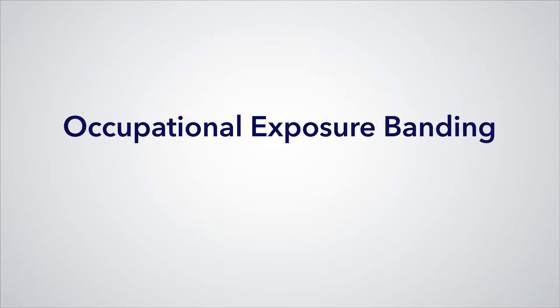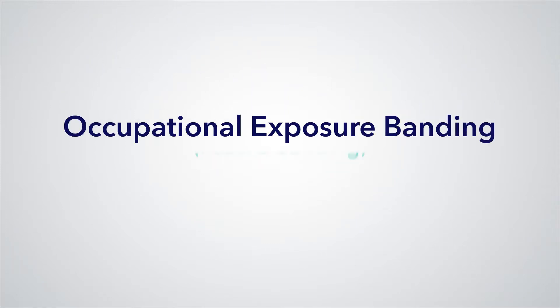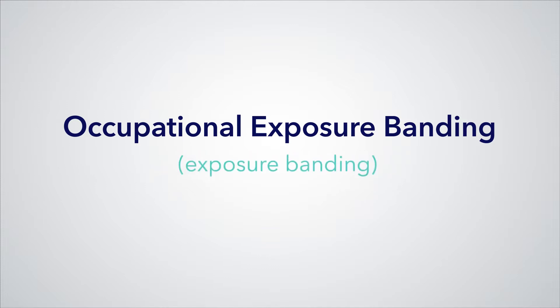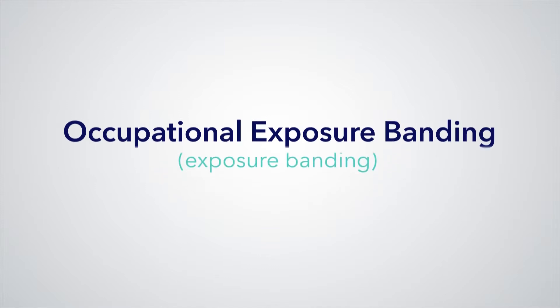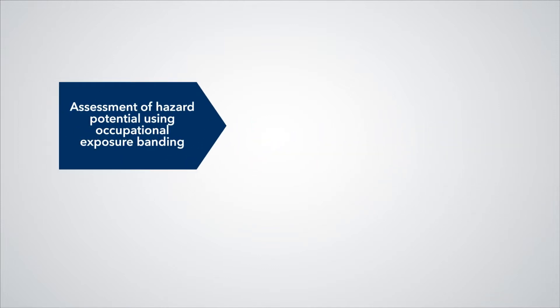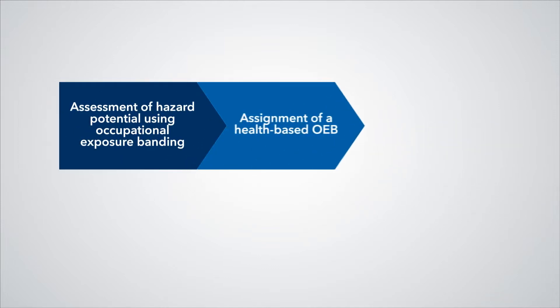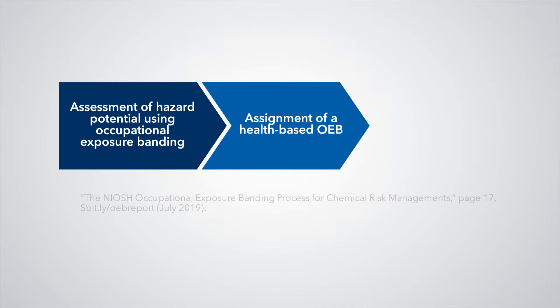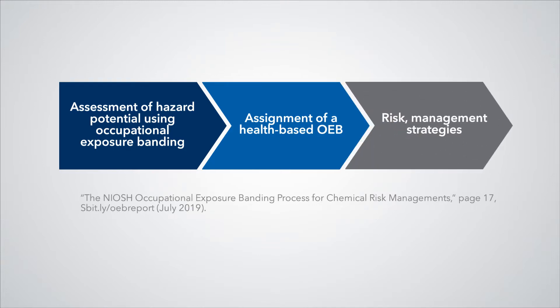Occupational exposure banding, also called hazard banding, health hazard banding, or exposure banding, is a process for assigning chemicals into categories based on the chemical's toxic potency and the risk of adverse health effects associated with exposure.